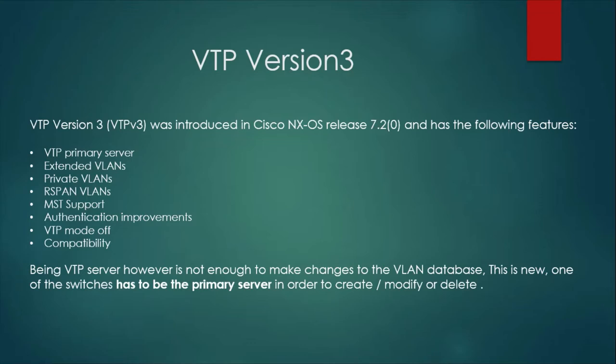VTP version 3 is compatible with all features of version 1 and version 2. One important new concept is that simply being a VTP server is no longer sufficient to make changes to the VLAN database. In version 3, a switch must specifically be designated as the primary server in order to create, modify, or delete VLANs.